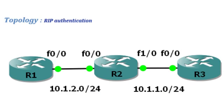Hi and welcome to freenetworkstudy.com. In this lab we'll be configuring RIP authentication. We'll actually be configuring two types of authentication: clear text password and MD5 authentication. From the requirements list, the link between R1 and R2 has to be authenticated using MD5, and the link between R2 and R3 has to be authenticated using clear text password. And of course we still have to have end-to-end IP connectivity.